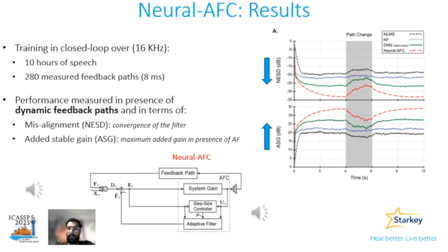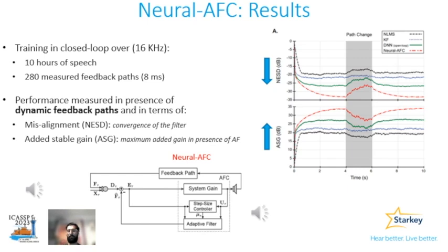To evaluate the benefit of training in the closed loop, we use 10 hours of speech and 280 different measured feedback paths to compare closed-loop training with open-loop, state-of-the-art Kalman filtering, and NLMS. For the metrics, we use misalignment — a measure of the relative error of the adaptive filter — and ASG, which shows how much additional gain we can provide in the hearing aid when utilizing the adaptive filter.